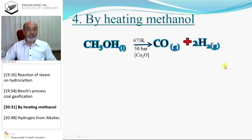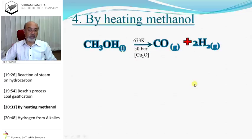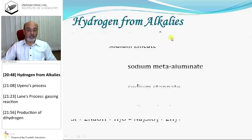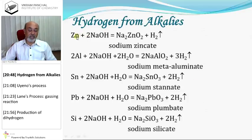By heating methanol at 673 K and 50 bar in the presence of cuprous oxide, we get carbon monoxide and hydrogen. Hydrogen from alkalies: zinc reacts with alkali like NaOH and produces hydrogen gas. Aluminium, tin, lead, and silicon also produce hydrogen gas when reacted with alkali.